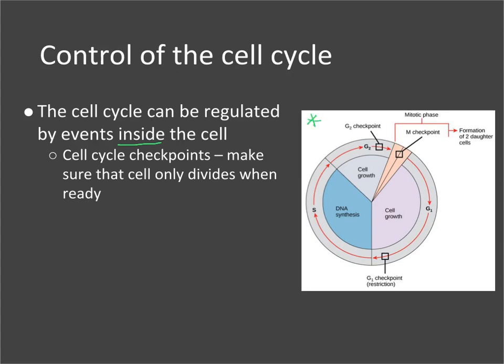There is a checkpoint towards the end of the G1 phase, where the cell makes sure it has everything it needs to make new DNA. It checks: do we have enough nucleotides? Do we have enough ATP? Do we have enough proteins and nutrients to go through the next step of the cell cycle?